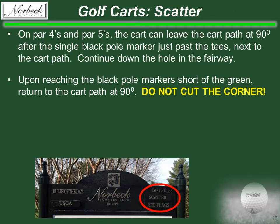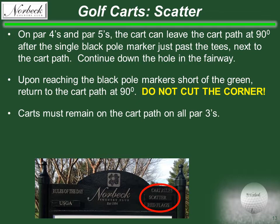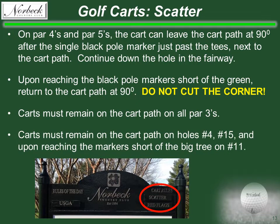Scatter means carts are allowed in the fairway, rough, and unrestricted areas. On par 4s and 5s, carts can leave the cart path after the black pole marker just past the tee boxes — leave the path at 90 degrees and head toward your ball. Continue down the fairway until you reach the next set of black poles short of the green; do not go beyond these markers. Return to the cart path at 90 degrees. Carts must remain on cart paths on all par 3s, on holes 4 and 15, and upon reaching the black pole markers short of the big tree in the middle of the fairway on number 11.